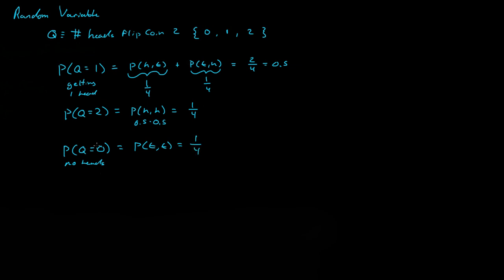We call Q a random variable, and more specifically a discrete random variable. A discrete random variable has a countable number of outcomes — you can get heads none of the times, one of the times, or both times when flipping a coin twice.